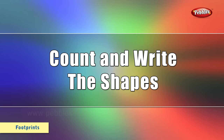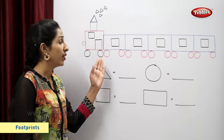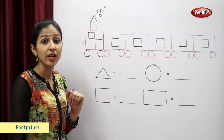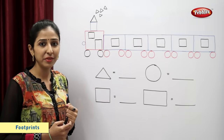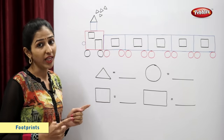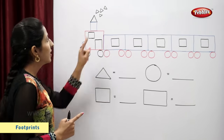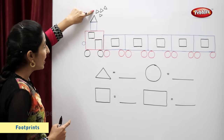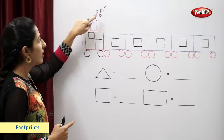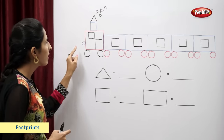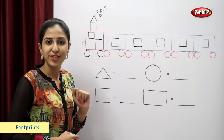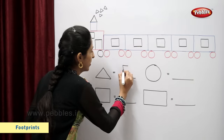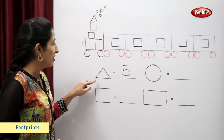Let's count and write the shapes. Students, look at the board. This is a train. It has many different shapes. So now let's count and write the shapes. This is a triangle. Let's count the number of triangles: one, two, three, four, five. So there are five triangles. Let's write: five triangles.